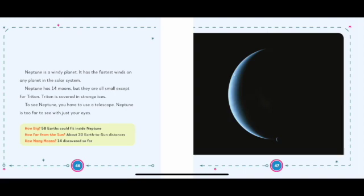How big? Fifty-eight Earths could fit inside Neptune. How far from the Sun? About thirty Earth-to-sun distances. How many moons? Fourteen discovered so far.